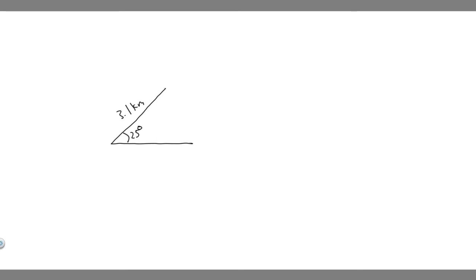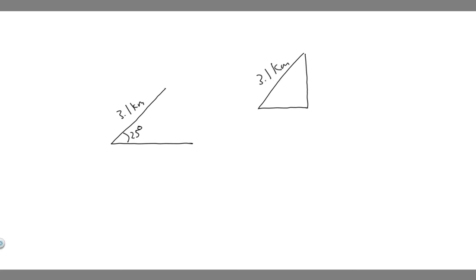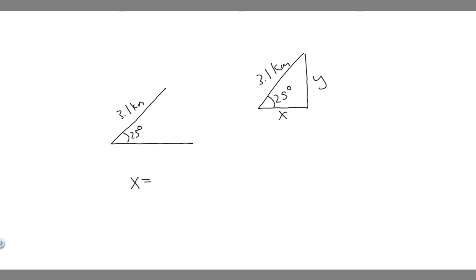What we're trying to do is find how far north and how far east. So essentially we're trying to find this length — how far north they have to walk, and how far east. We can solve for this by using trig, so we'll just rewrite it as a triangle. We know this length is 3.1 kilometers and the angle is 25 degrees. We label the east side x and the north side y. Using vector component formulas: x equals m times cosine of the angle, and y equals m times sine of the angle, where m is the magnitude (hypotenuse).